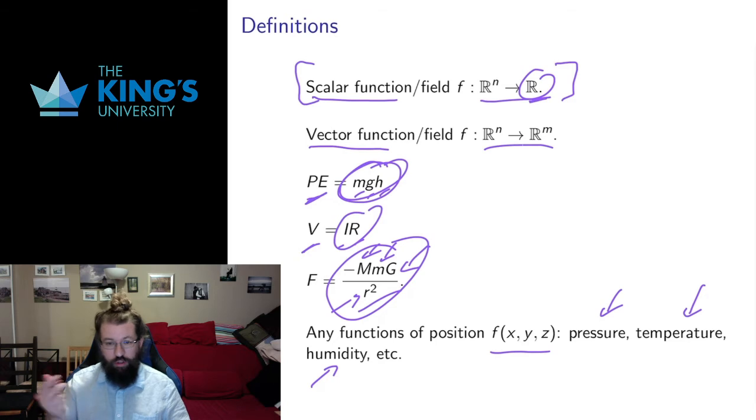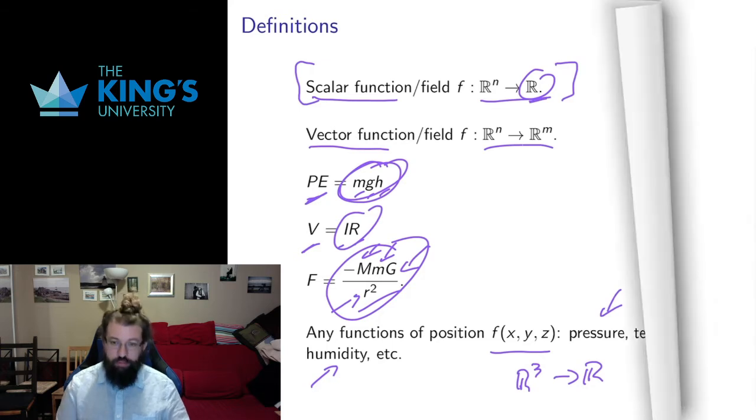any other thing that you can measure that depends on positions x, y, and z can be thought of as a function from R³ to R because it depends on three variables of position. And those are the type of things that we want to think about with scalar fields.